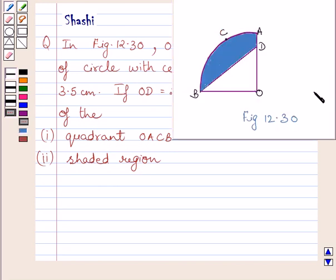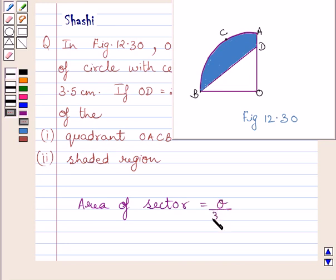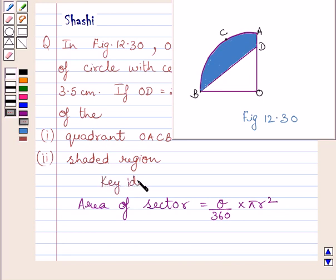This is the given figure 12.30. First of all, let us understand that area of sector of a circle is equal to theta upon 360 multiplied by pi r squared, where theta is the angle of the sector in degrees and r is the radius of the circle. We will use this formula as our key idea to solve the given question.